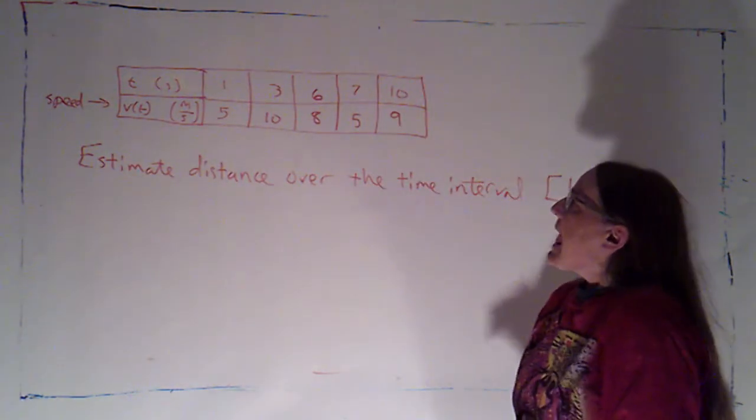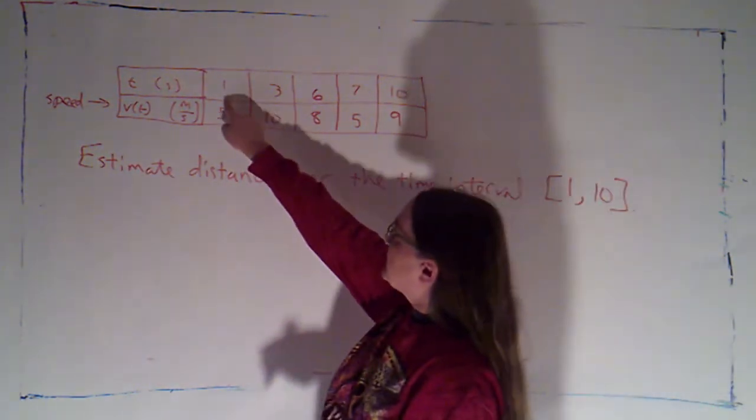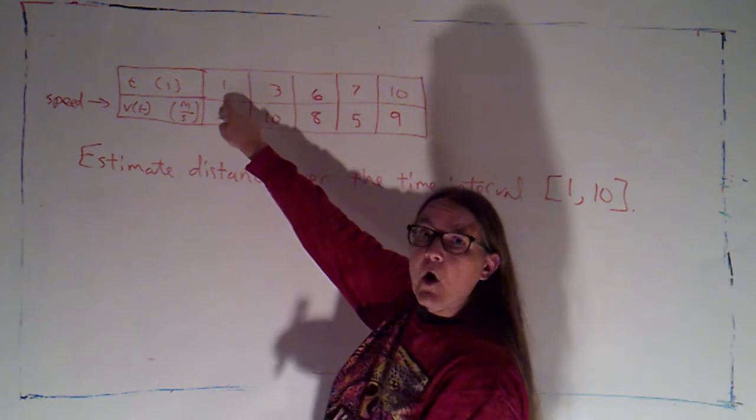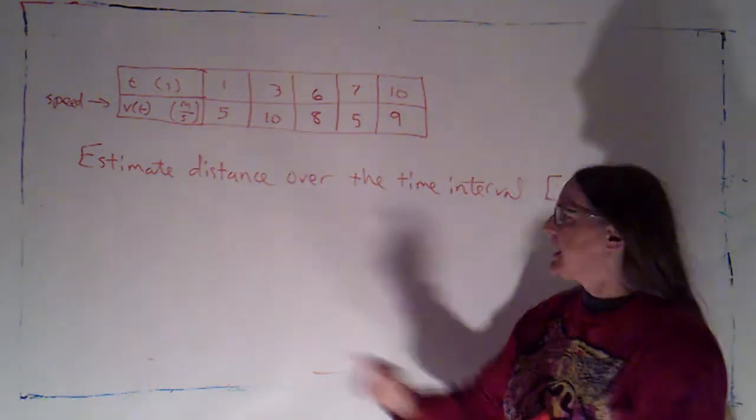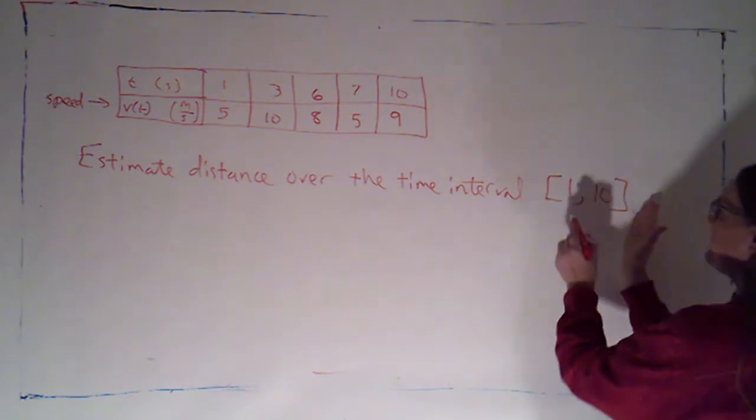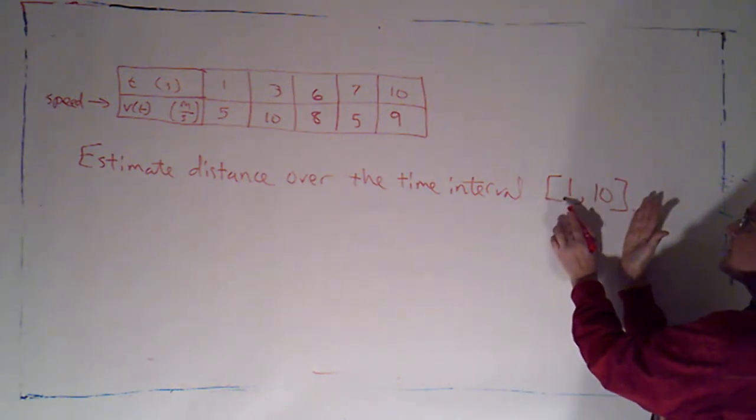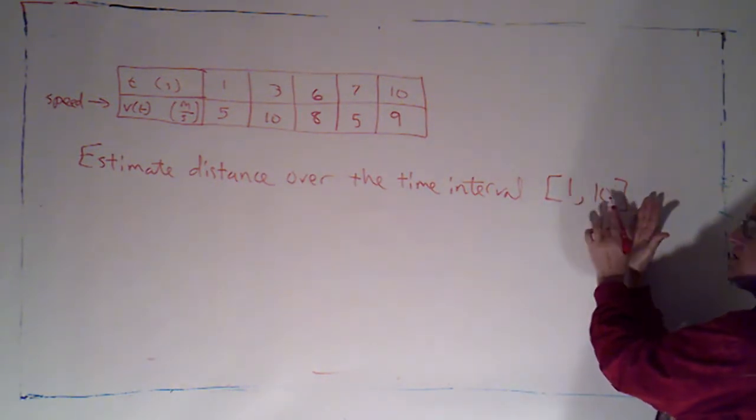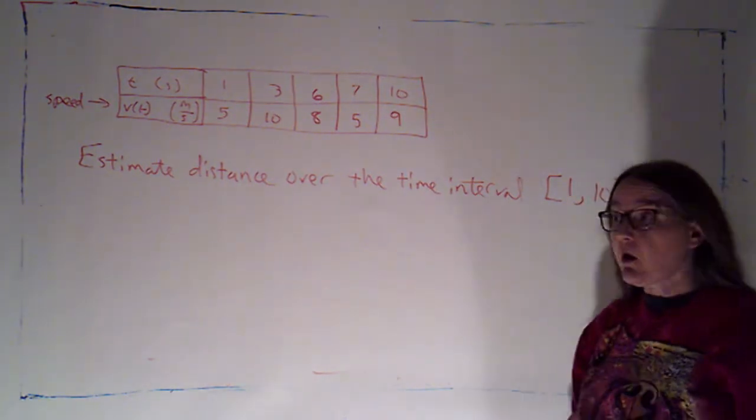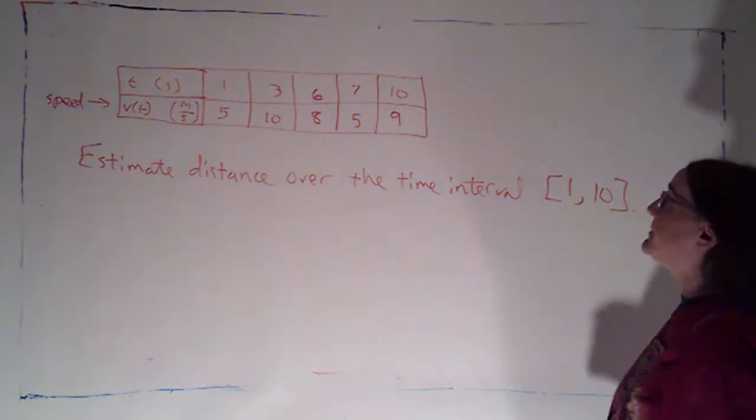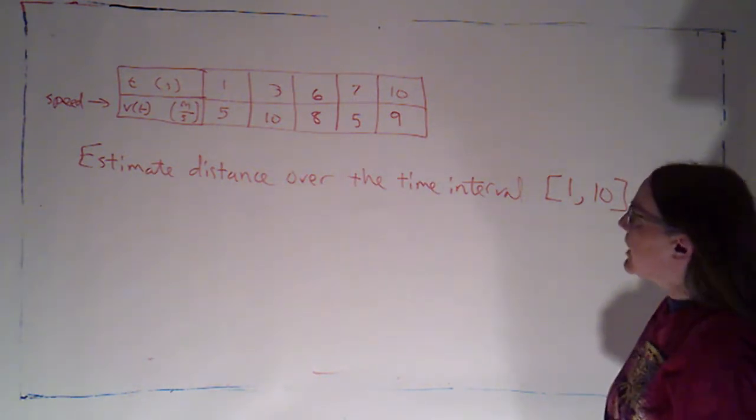Okay, now the first time where I give you any measurements is at time 1. That doesn't necessarily mean that's when the particle started moving, but as I read the question, we're asked to find the distance over the time interval from time 1 to time 10. So the starting time doesn't always have to be time 0. It often will be, but it doesn't have to be.